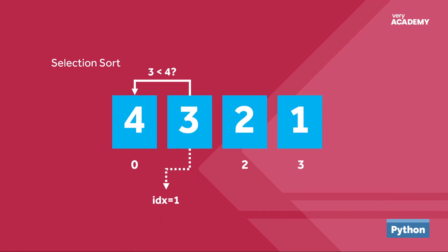Having seen that recap, we now move over to selection sort. In the same way as we've done with the previous algorithms, we go through this step by step in a visual way, and then we move over to actually trying to program this using Python.